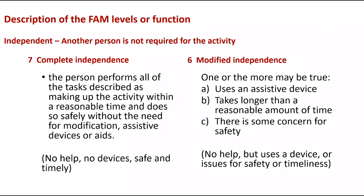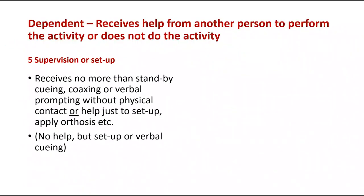Looking at the scoring levels: a seven is complete independence — they perform all tasks described in the makeup of the activity, within reasonable time, safely, with no need for modification, assistive devices, or aids. A six is modified independence — nobody needs to be there to help, but they may independently use a device, take longer than usual, or there may be some safety concerns. At a five, it's supervision and setup — they receive no more than standby cueing, coaxing, verbal prompting, or just setup prior to the person doing the task.